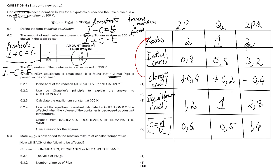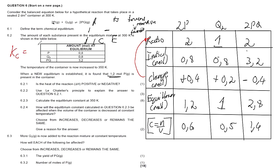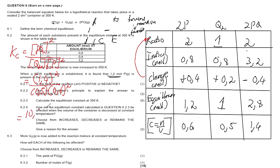Now we can calculate Kc. Kc equals the concentration of product PQ raised to the power of its ratio, over the concentration of Q₂ multiplied by the concentration of P squared. Substituting: Kc = (1.4)² ÷ (0.5 × (0.6)²). Punching that into the calculator gives Kc = 10.89. That's the answer for a total of 8 marks.